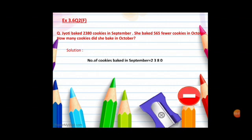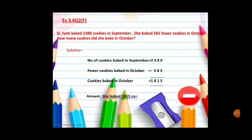Now see the second number 565. See the words written around this: baked fewer cookies baked in October. This will be our second statement, fewer cookies baked in October, 565. Now we need to find out the number of cookies baked in October, this will be our third statement. Now we will minus, the answer is 1815. Now we will write down the final answer, and final answer we will take from the last line of the story sum. She baked 1815 cookies in October. This is how we have to do the story sum.